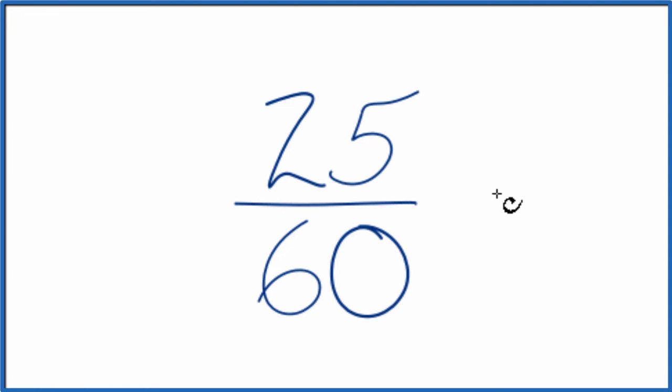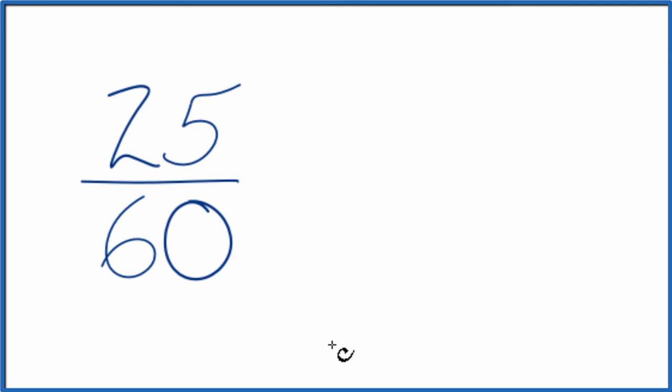And to do that we need to find a common factor, something that goes into 25 and 60. So these are the factors for 25 and 60.